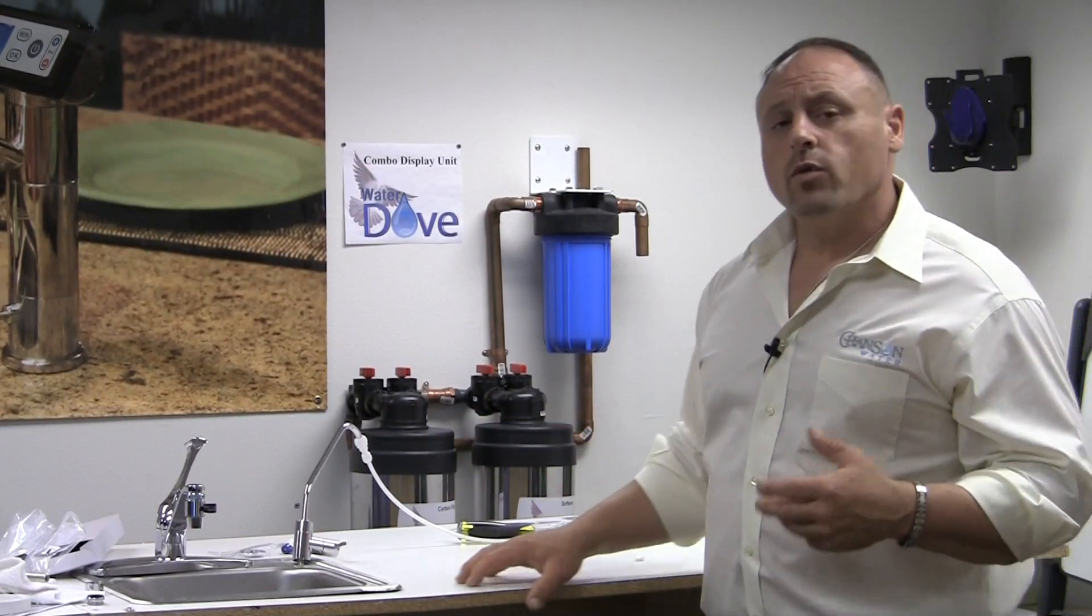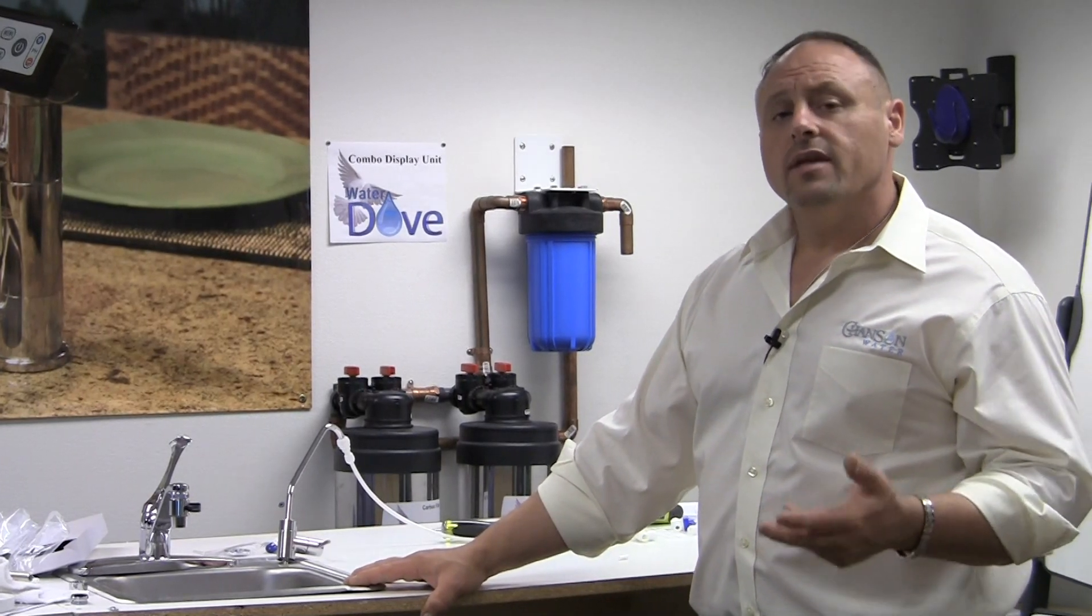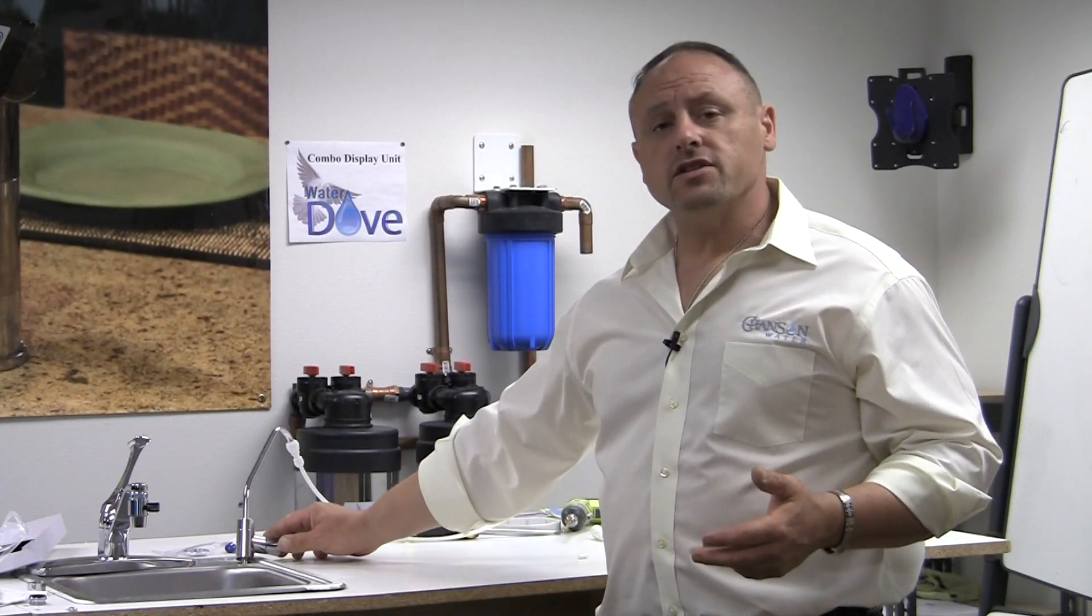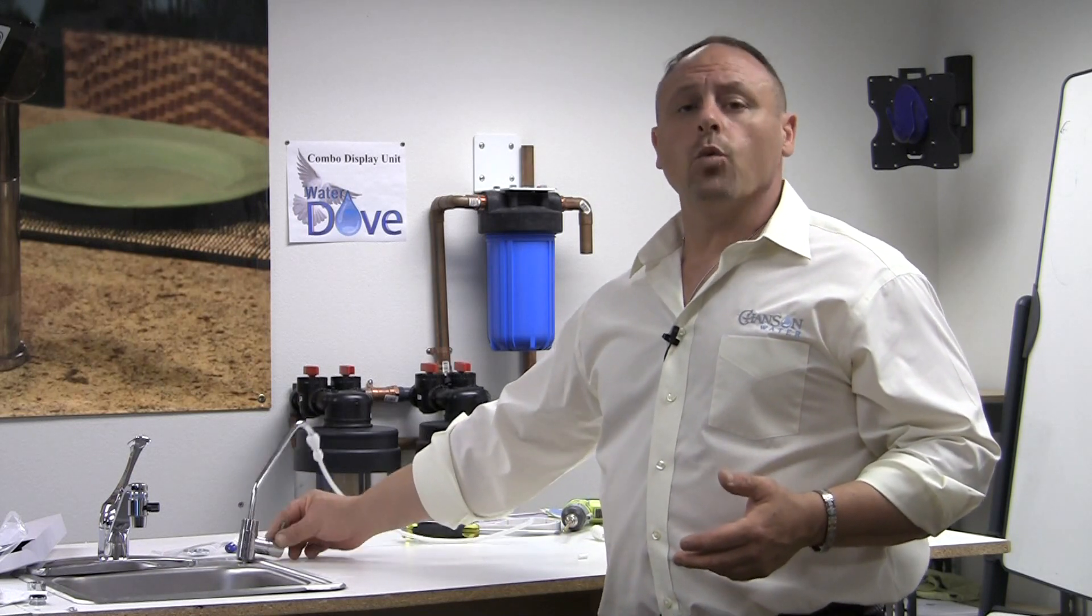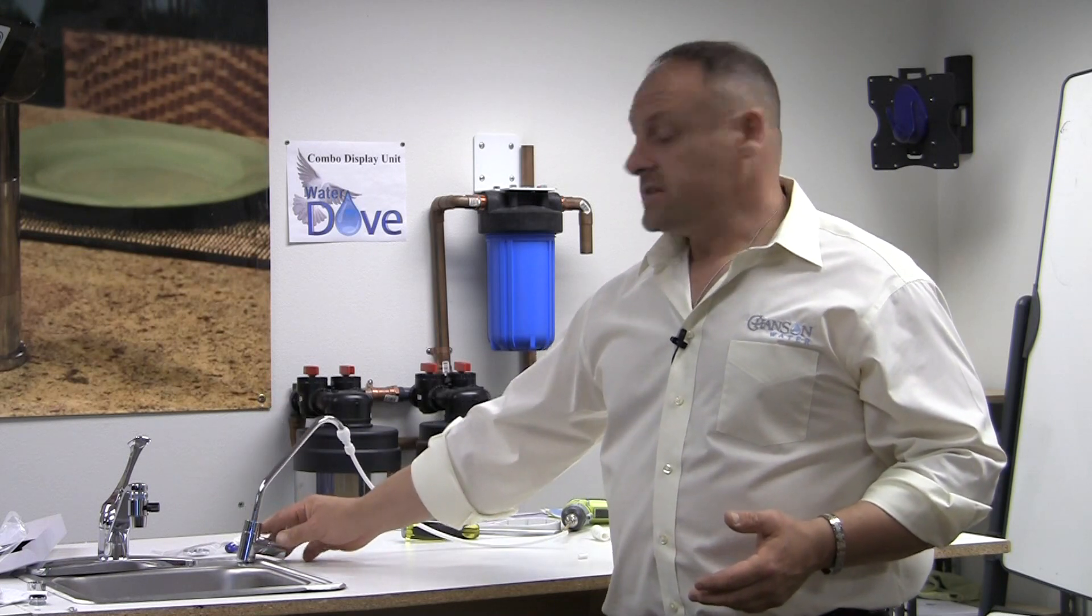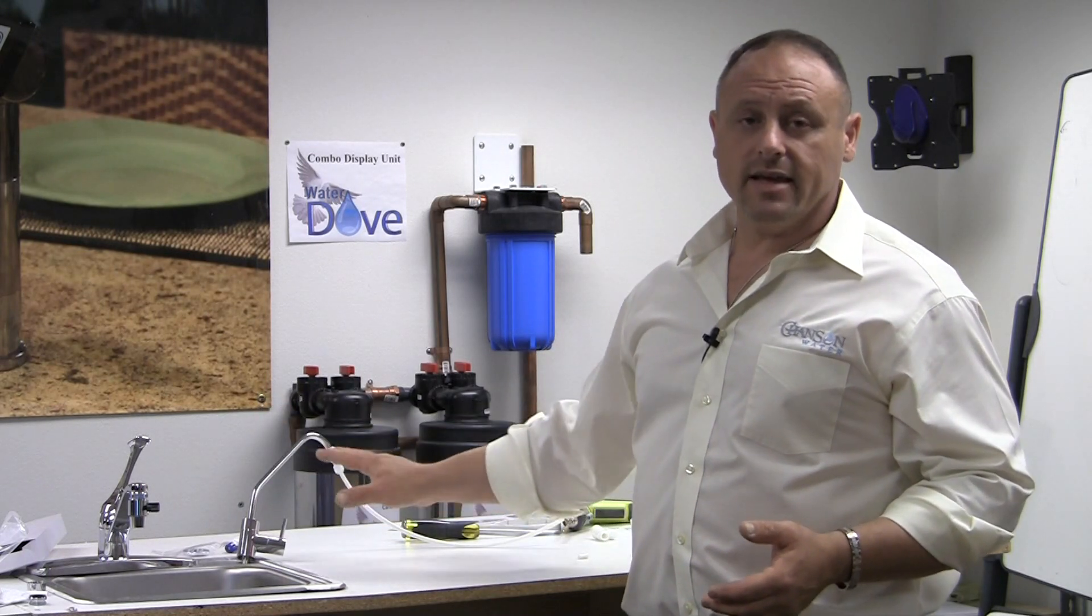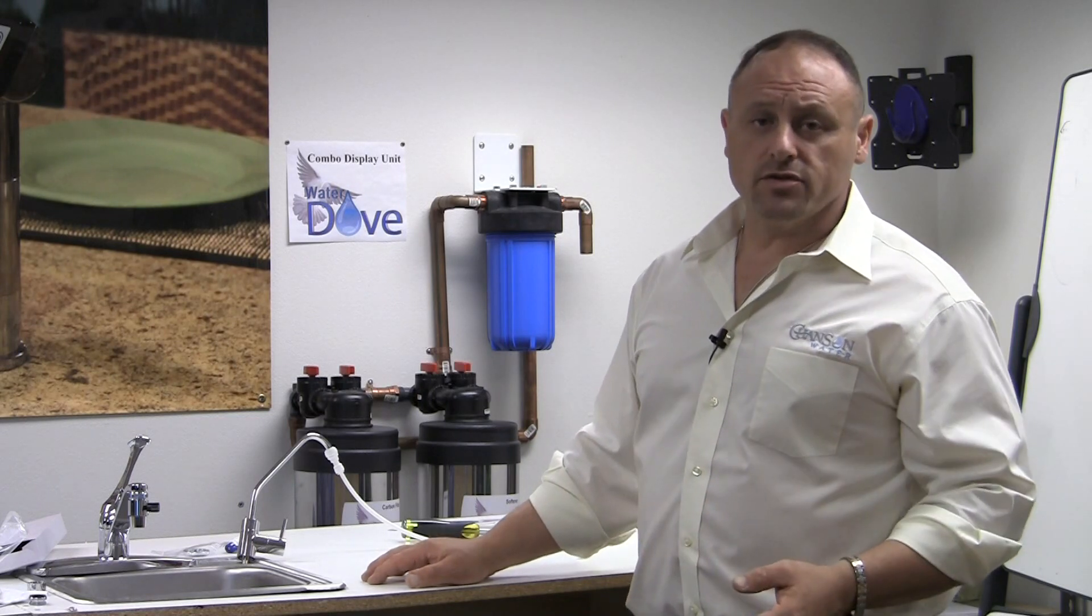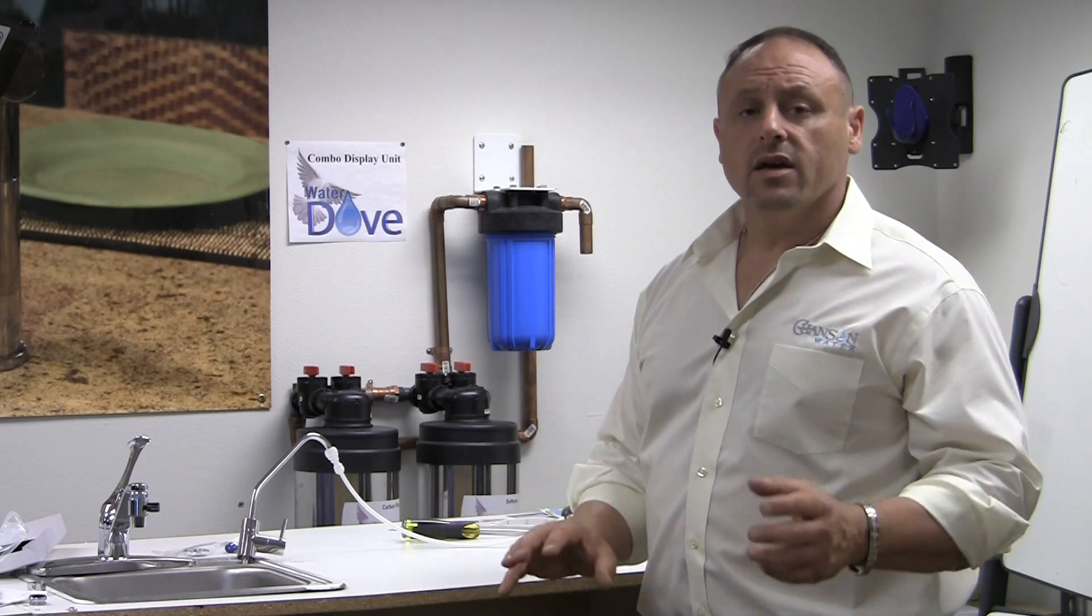If you have one of our other style countertops, then you will actually turn the water on and off with this lever here and you'll be able to control the water flow. So this is a really great way to set up a countertop ionizer and get the absolute best filtration under the sink with nothing being seen whatsoever.